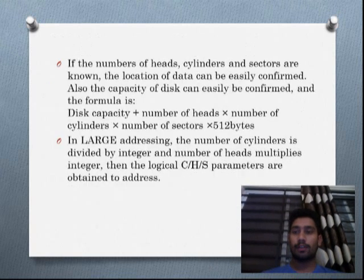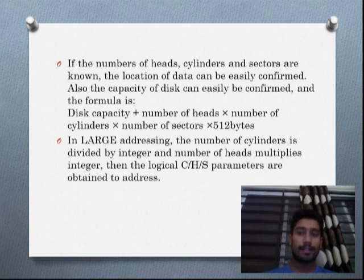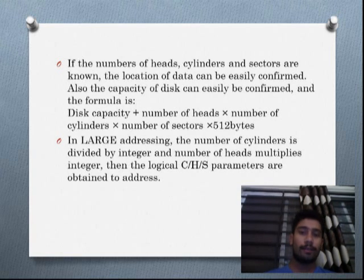If the number of heads, cylinders, and sectors are known, the location of data can be easily confirmed. Also, the capacity of the disk can be easily confirmed. The formula is: disk capacity equals number of heads multiplied by number of cylinders multiplied by number of sectors multiplied by 512 bytes, as each sector is 512 bytes.